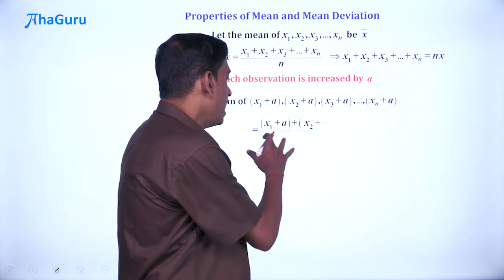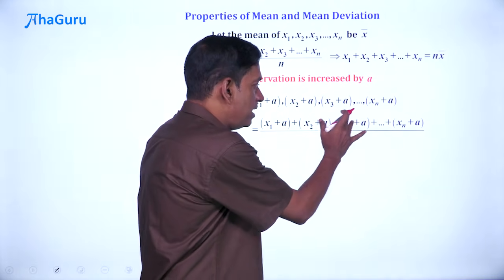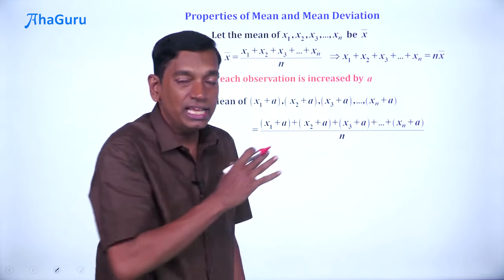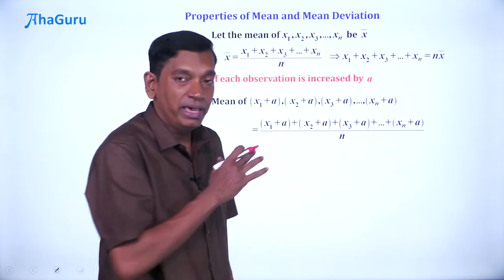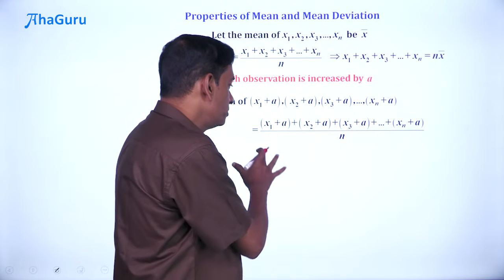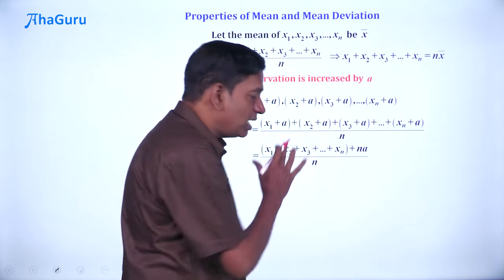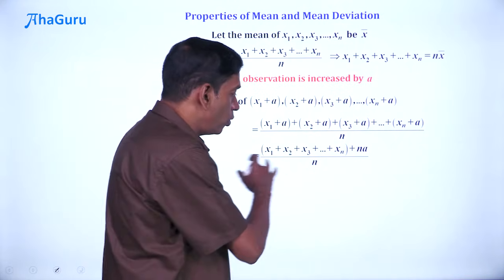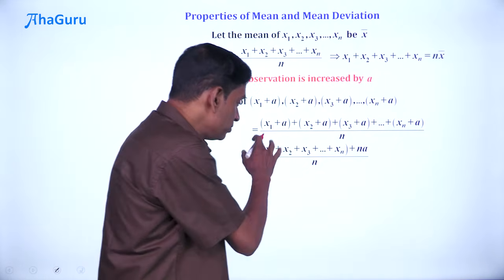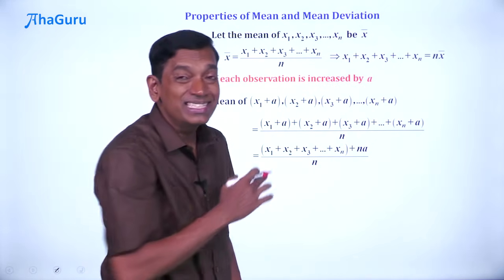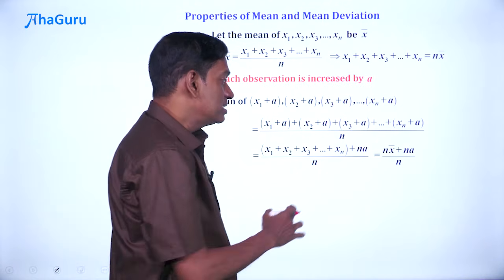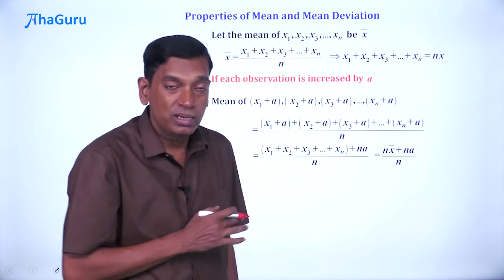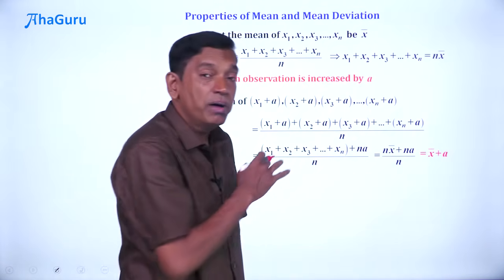We can write the formula as [(x₁ + a) + (x₂ + a) + (x₃ + a) + ... + (xₙ + a)]/n. We can group this as (x₁ + x₂ + ... + xₙ) + na, the whole divided by n. But x₁ + x₂ + ... + xₙ is n × x̄, so it is (n × x̄ + na)/n, which gives us x̄ + a.